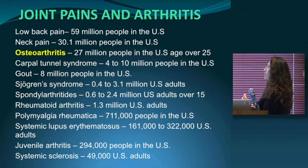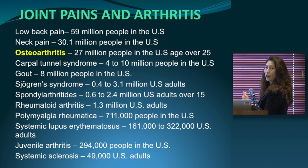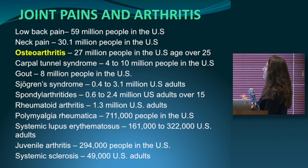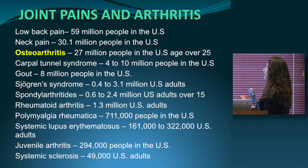Polymyalgia rheumatica causes joint pains in the elderly — more in people older than 50 — affecting about 700,000. Systemic lupus affects up to about 22,000, and systemic sclerosis about 49,000.